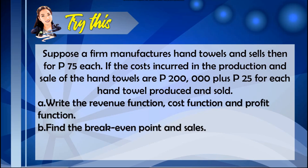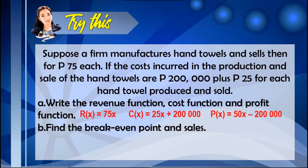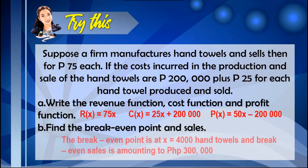At this point, let us check your understanding. You may pause the video to answer this problem. For letter A, the revenue function is R(x) = 75x, the cost function is C(x) = 25x + $200,000, and the profit function P(x) = 50x − $200,000. For letter B, the break-even point is at 4,000 hand towels and the break-even sales amount to 300,000 pesos. Were you able to get this right? If yes, very good.